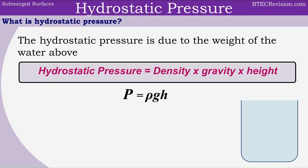Let's start by looking at hydrostatic pressure, which is due to the weight of the water above. The equation is given by hydrostatic pressure equals density times gravity times height, and the short form is p equals rho gh, where p stands for hydrostatic pressure, rho stands for density, g stands for gravity, and h stands for height.